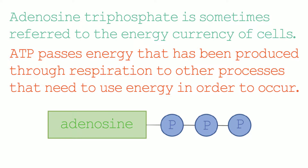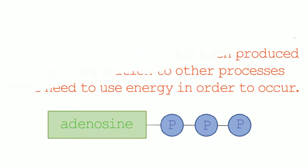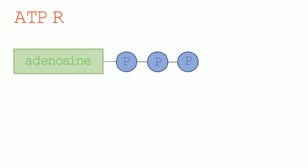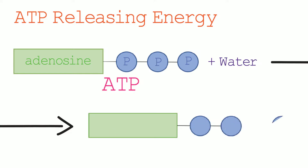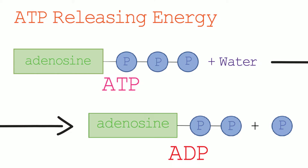Now let's have a look at how ATP actually releases energy. Energy is released from ATP when it is broken down in a cell. Water is needed to break down ATP, and it is broken down by the end phosphate breaking off. This creates adenosine diphosphate, which is ADP, and a single phosphate. The breaking down of ATP also produces energy.